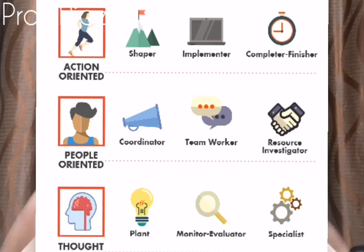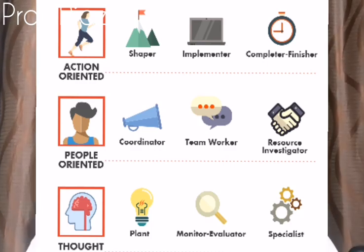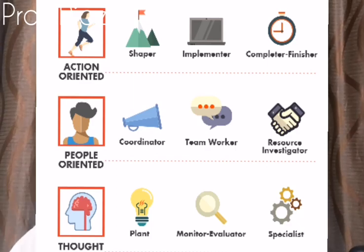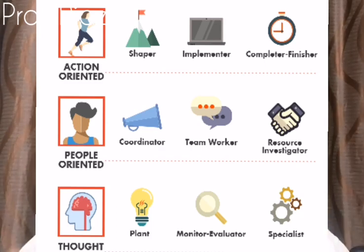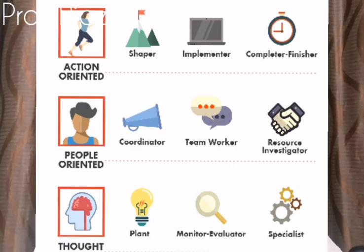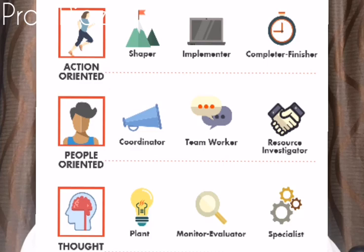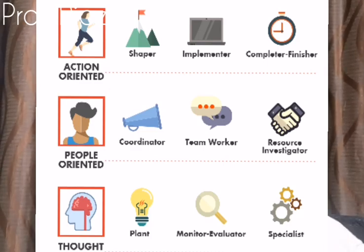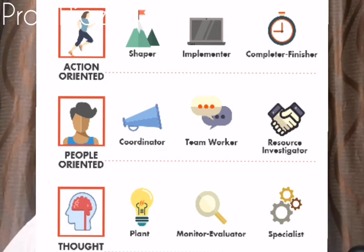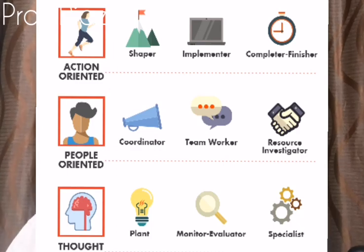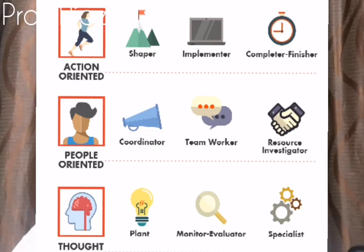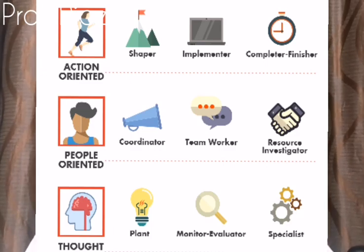Moving to the action role, there are again three roles. The first is the Implementer, who actually executes and implements the plans created by the thinking people. The second is the Shaper, who gives shape to activities in the team. Finally, you have the Finisher or Completer, who follows up and completes assignments.